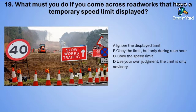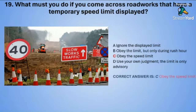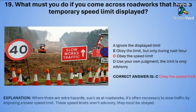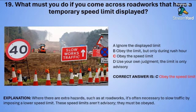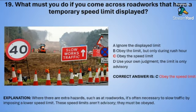The correct answer is C — obey the speed limit. Where there are extra hazards such as at roadworks, it's often necessary to slow traffic by imposing a lower speed limit. These speed limits aren't advisory — they must be obeyed.